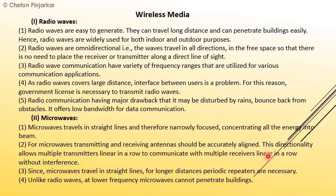The transmitting and receiving antennas must be accurately aligned. This allows multiple transmitters arranged in a row to communicate with multiple receivers linearly without interference. Since microwaves travel in a straight line, for longer distances, repeaters are periodically necessary.